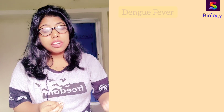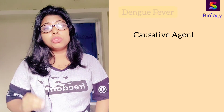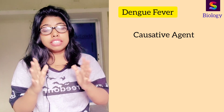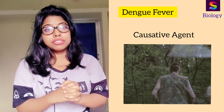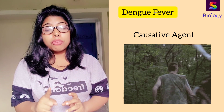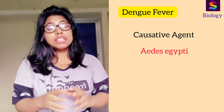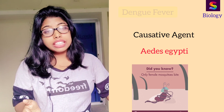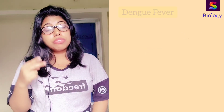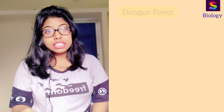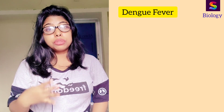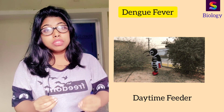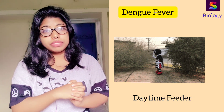Now we will look at the causative agent of dengue virus. The vector is a mosquito — the Aedes aegypti mosquito. We will study the mechanism of how it infects a healthy person. Dengue virus has four serotypes — DEN-1, DEN-2, DEN-3, and DEN-4 — and the mosquito is a daytime feeder, meaning it bites humans during the daytime.